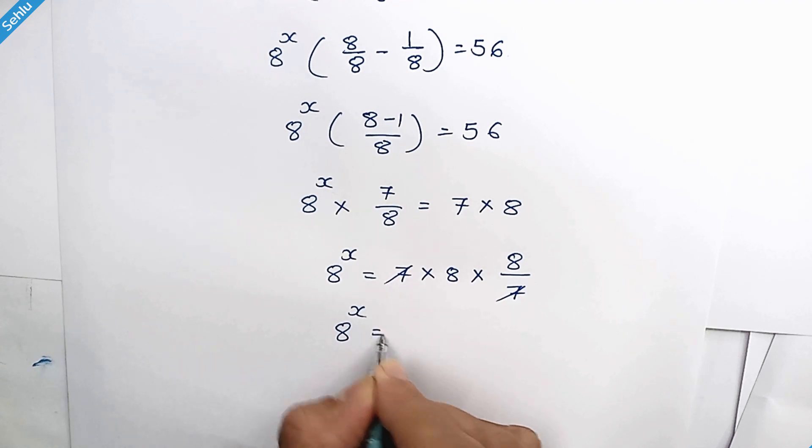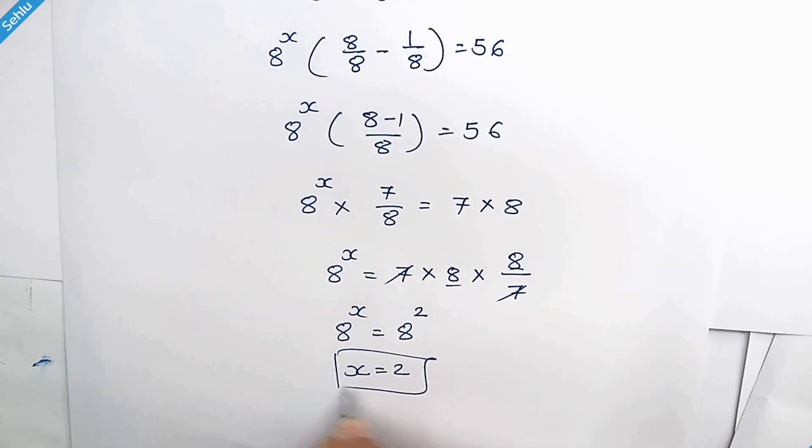So we have 8 to the power x is equal to 8 square. Same base both sides, so x is equal to 2 is our answer.